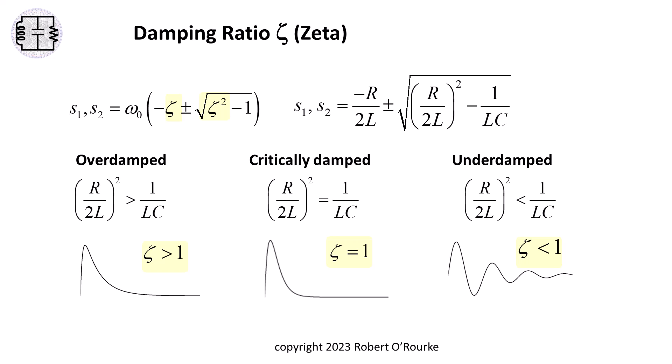The values of the damping ratio zeta relative to 1 correspond to the three damping cases of the series RLC natural response.